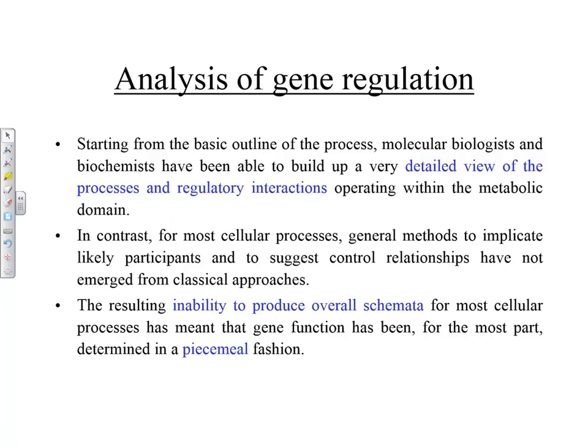In the case of metabolism, starting from the basic outline of the process, molecular biologists and biochemists have been able to build up a very detailed view of the processes and regulatory interactions. Even the molecular biology book we use as a reference has a chapter devoted to that. For glycolysis, there is a splitting of 6-carbon sugar glucose into two 3-carbon sugars — a series of 10 steps, each catalyzed by an enzyme. Then using oxygen you produce carbon dioxide and water. People have exact knowledge about which enzyme catalyzes which step and how much energy is produced.